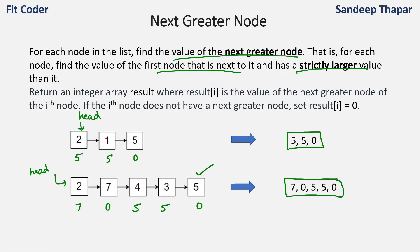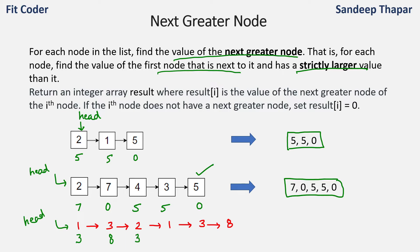Let's take one more example with a linked list starting at head 1: 1→3→2→1→3→8. For 1, the value to the right greater than 1 is 3. For 3, the value greater than 3 to the right is 8. For 2, we have 3 which is greater. For 1, we have 3, and for 3 we have 8. There is no value next to 8, so we return 0. So the answer for this will be [3, 8, 3, 3, 8, 0].